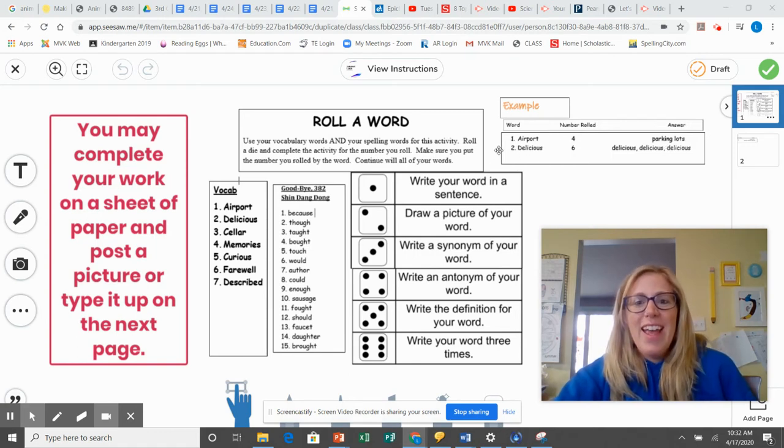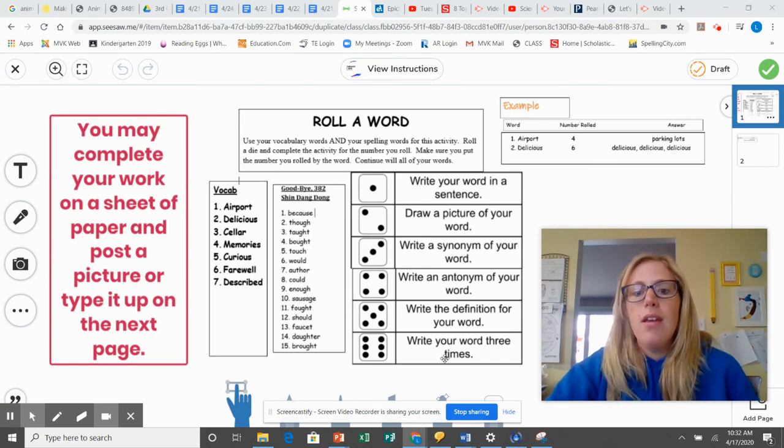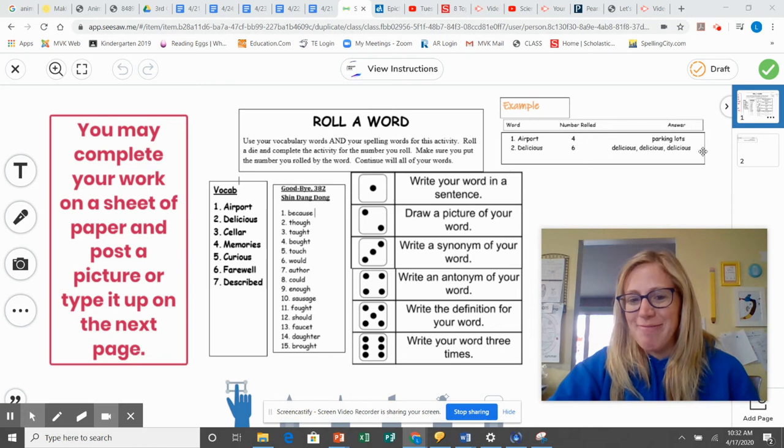Okay. And then, so the next word is delicious. I type up delicious and I see what I roll. Okay. Write your word three times. Delicious, delicious, delicious. So you're going to do this with all of your words.